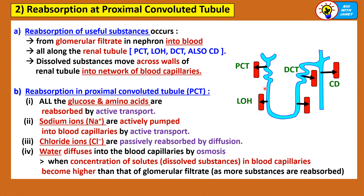For reabsorption in the proximal convoluted tubule — more substances are reabsorbed at the PCT than in other parts. All the glucose and amino acids are reabsorbed by active transport using energy. Sodium ions are actively pumped into the blood capillaries by active transport. Chloride ions are passively reabsorbed by diffusion. Water diffuses into the blood capillaries by osmosis — when the concentration of solutes in the blood capillaries becomes higher after solutes like glucose and amino acids are reabsorbed, the concentration of dissolved substances is higher in the blood capillaries than in the glomerular filtrate, so water is reabsorbed into the blood capillaries by osmosis.